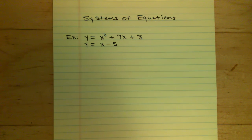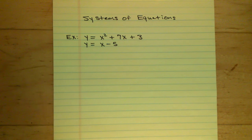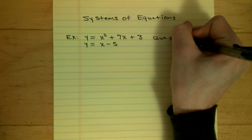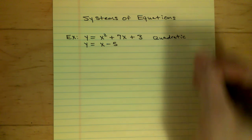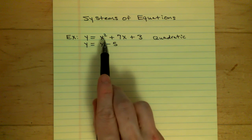So this is example two. Now in my last video, we did systems of equations. And what we learned was, if we have an equation where the highest exponent is two, that is called quadratic. So this is going to be the quadratic equation, and that's only because the highest exponent is two.